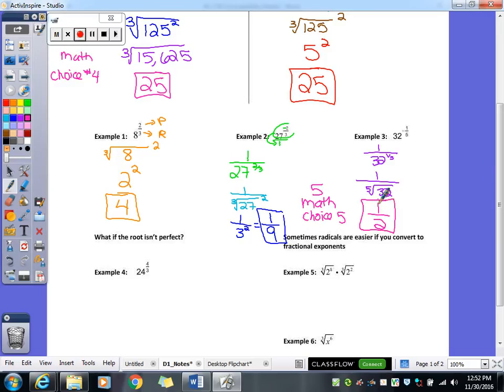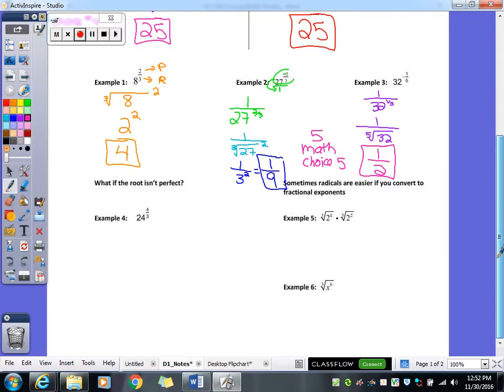So you use that button for any root. If you try to find the 7th root of something for some reason, you would hit 7, math, choice 5. That would find any root for you. Even if you wanted to do just the square root, you could use that same button too and type in your 2 first. So then all of those examples so far have worked out really well because they were either perfect cubes or they were perfect squares or perfect fifths like in that last example.